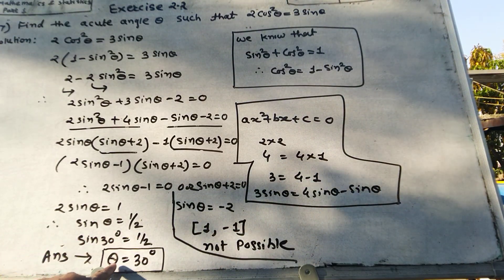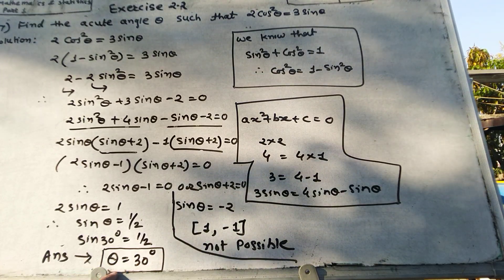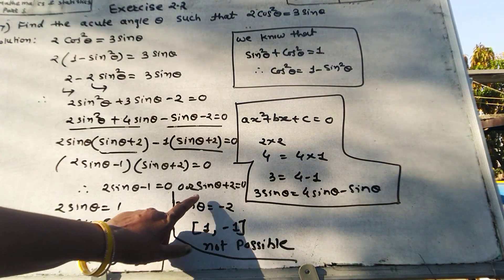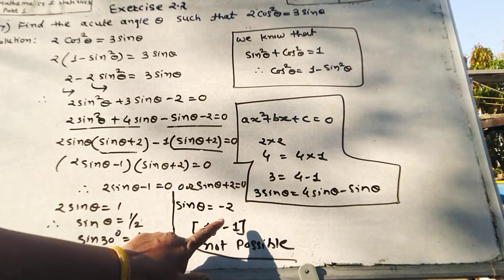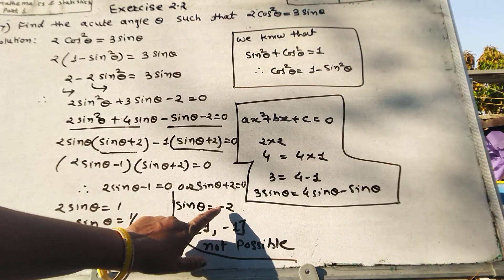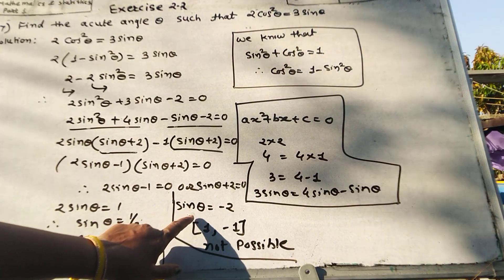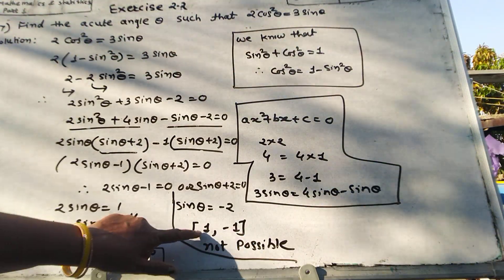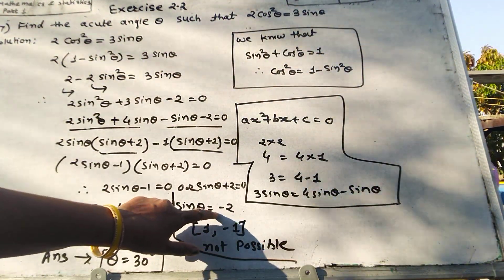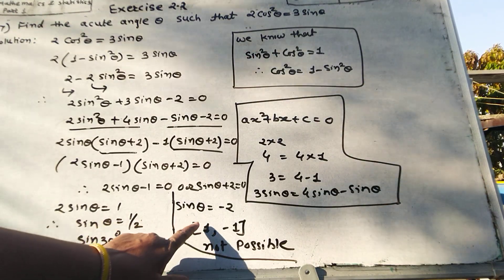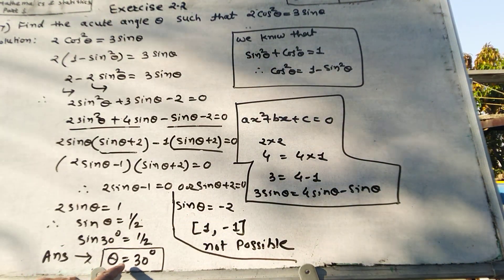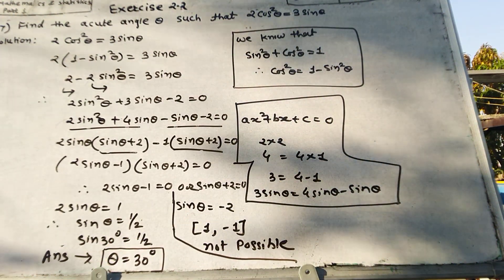Theta is equal to 30 degrees. The sine value of negative 2 is not possible since it falls outside the valid range. Therefore, the only solution is theta equals 30 degrees.